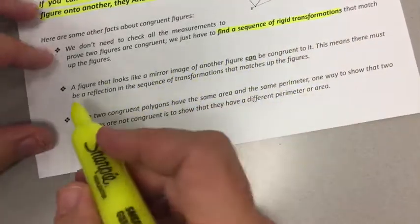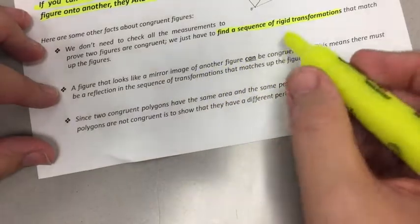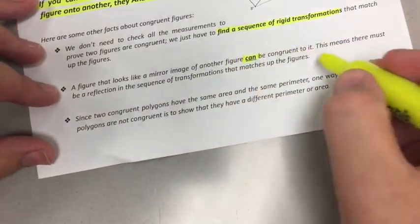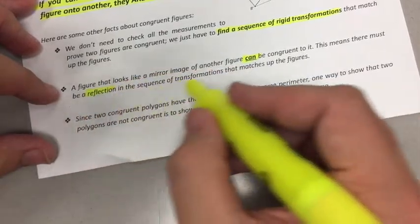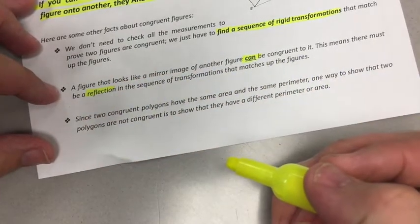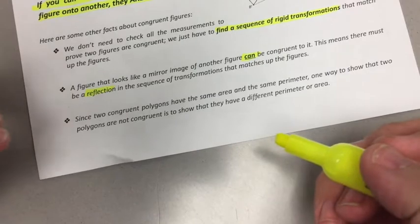If we can use reflection, rotation, and translations to get it there, one on top of the other, we're good. A figure that looks like a mirror of another figure can be congruent to it. This means there must be a reflection in the sequence of transformations. If there's a reflection and it lines up, then we're good.